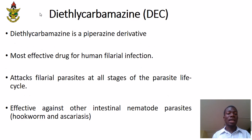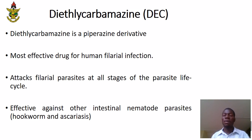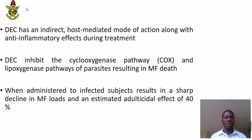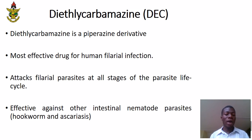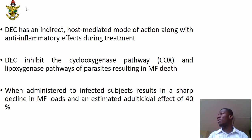The third class of drugs is diethylcarbamazine, or DEC. These are the most effective drugs against human filarial infections because they are able to attack the parasites at all stages of their life cycle. DEC is able to target the adult worms as well as the microfilariae. It is also effective against other nematode parasites. DEC has an indirect host-mediated mode of action along with anti-inflammatory effects during treatment, and it has been shown to elicit about 40 percent adult-killing effect in some studies.